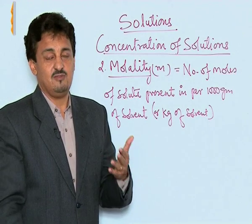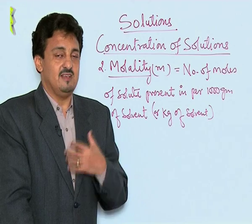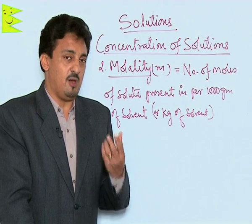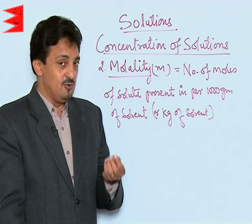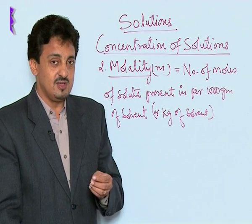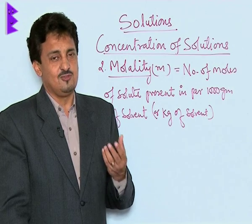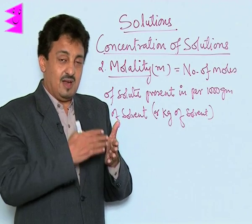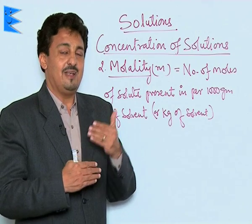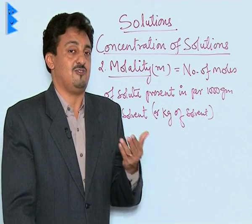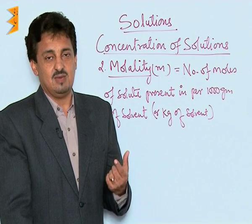...mass of solution was a good option because mass is an independent property — it does not depend on temperature. But the problem was that once we take the mass of the solution, we need to know the mass of both the solvent and solute. If the solutes are gaseous or liquid, we need to know the density. That problem was completely omitted by taking just the mass of the solvent.